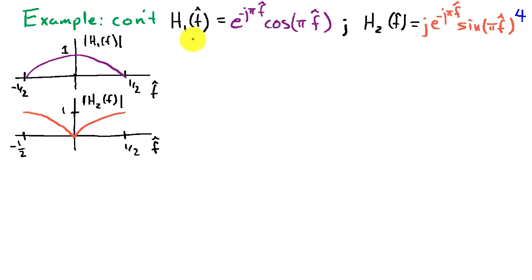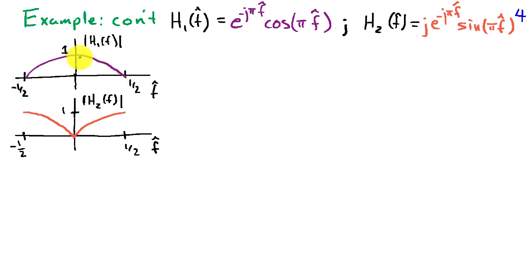The frequency response of the first system can be written as e to the minus j pi f hat times cosine pi f hat, and the frequency response of the second differencing system as j e to the minus j pi f hat times sine of pi f hat. Graphing the frequency response of the averaging system, we see that it emphasizes low frequency or zero frequency components and attenuates high frequency components. In contrast, the differencing system attenuates low frequency components and passes high frequency components. The cascade combination of these two is the product of these individual frequency responses.